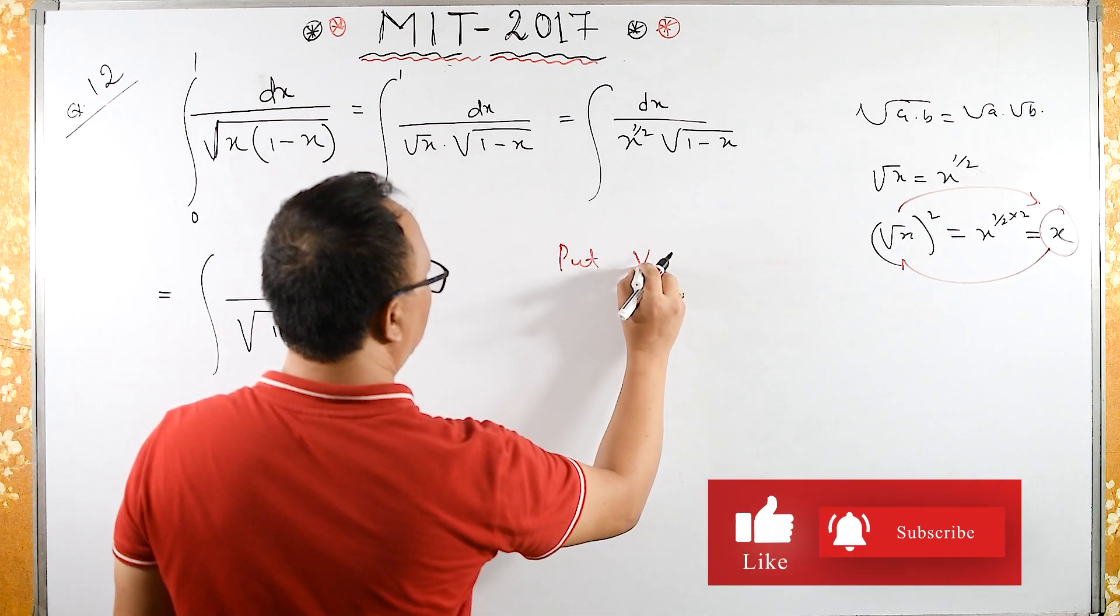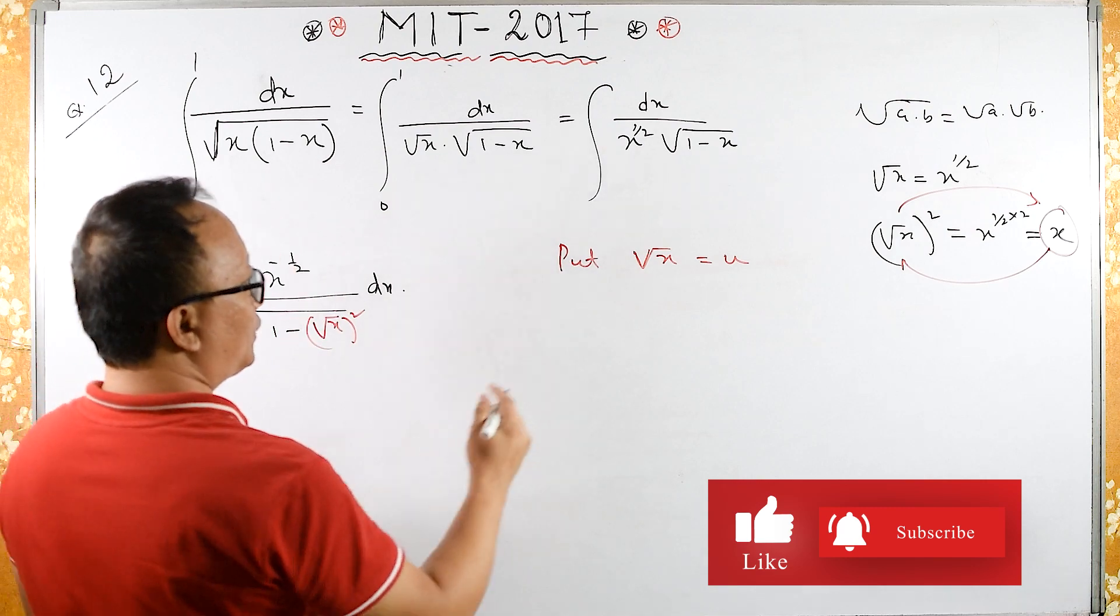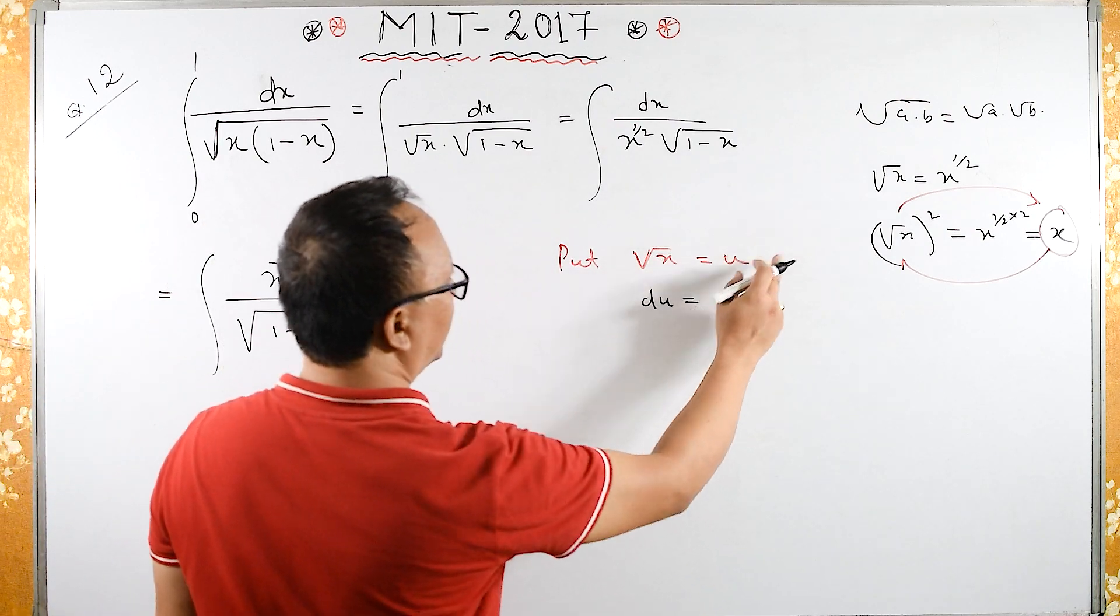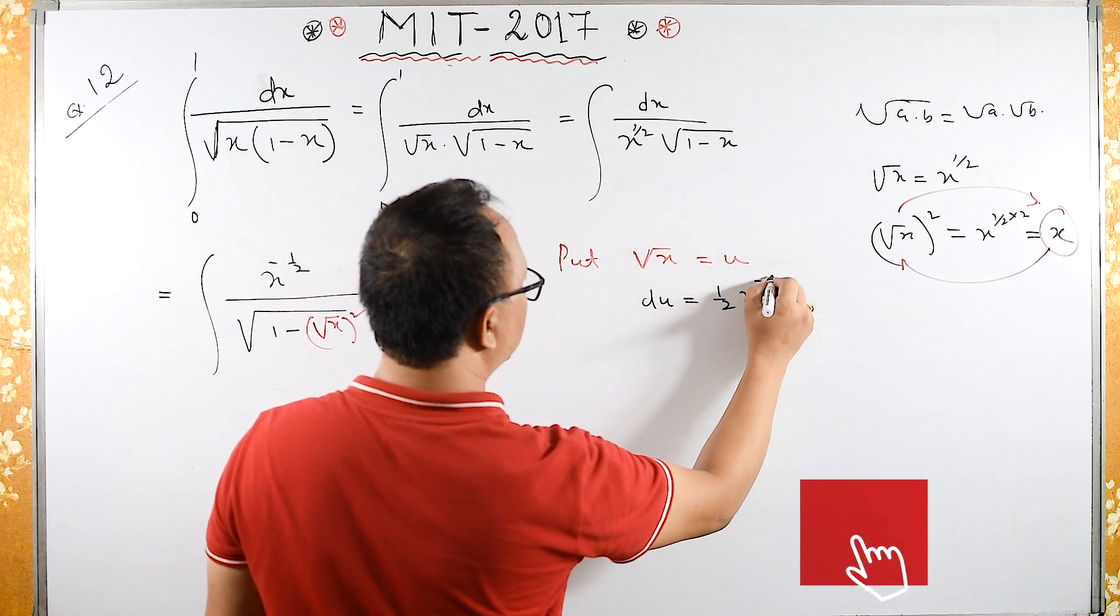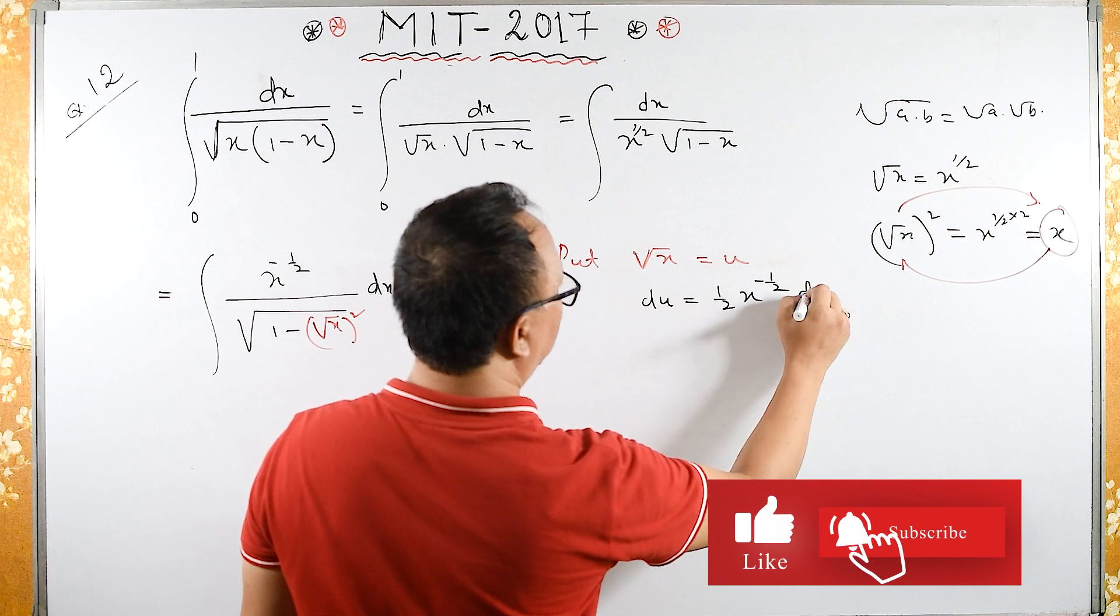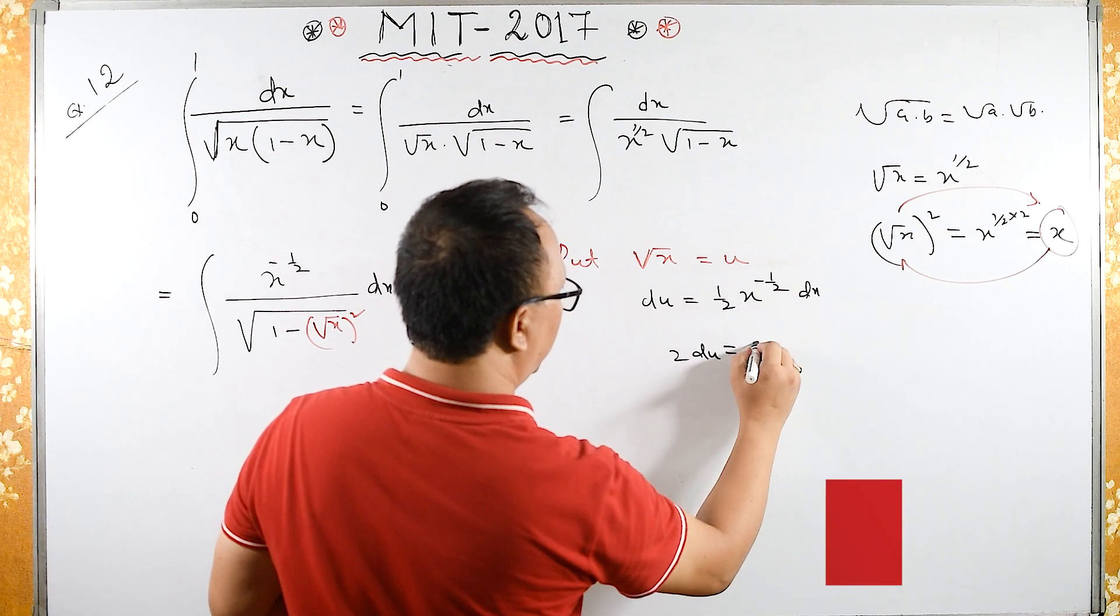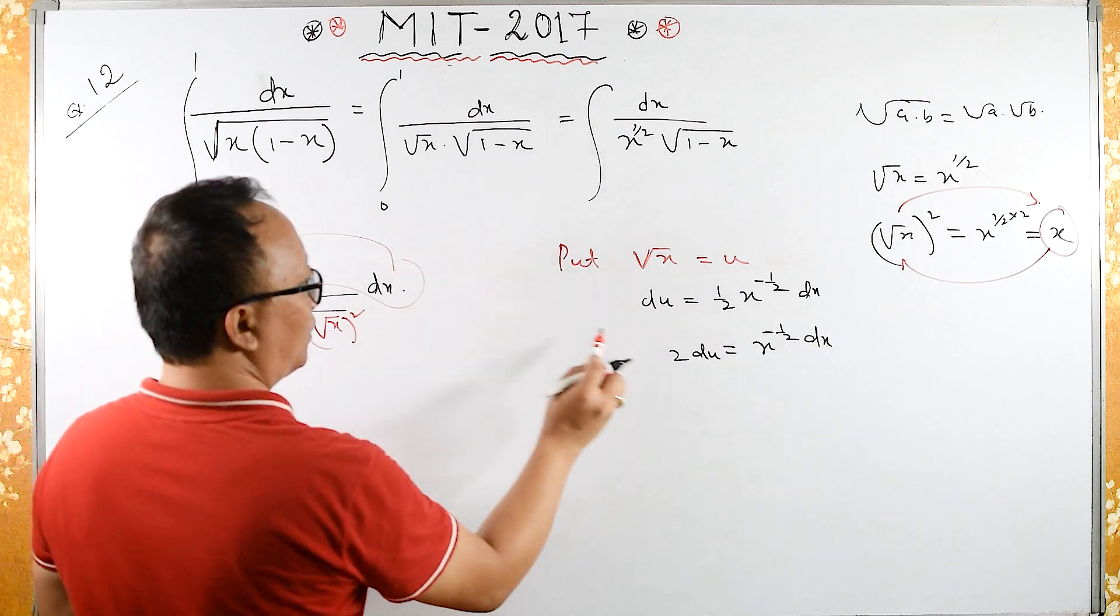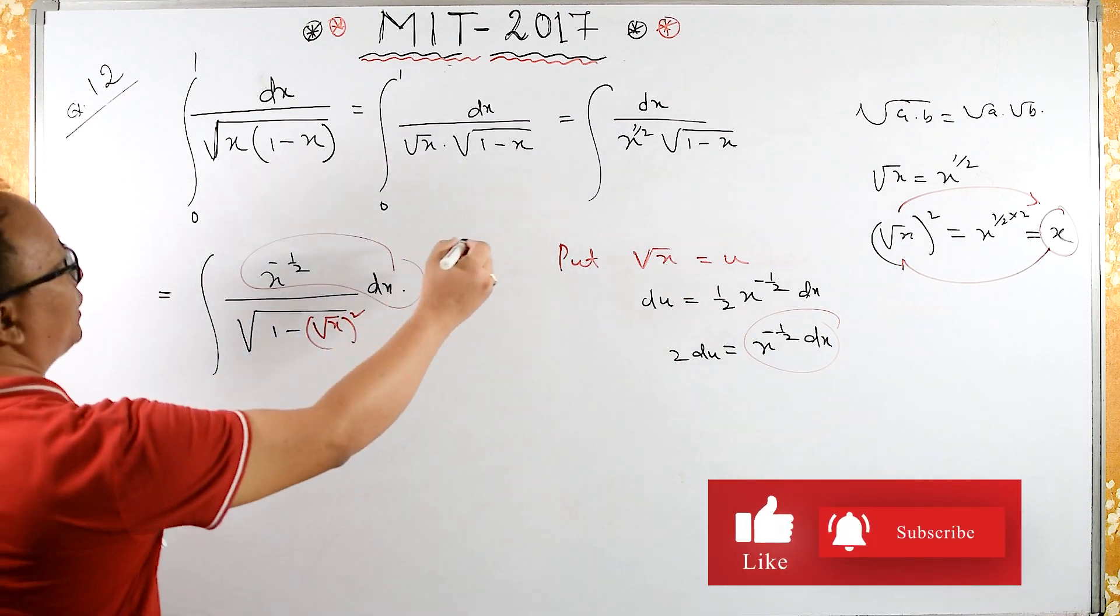Let's substitute square root of x equals u. The differentiation is half, x raised to half minus 1 is minus half. So du is the same as x raised to minus half times dx, and the limit is from 0 to 1.